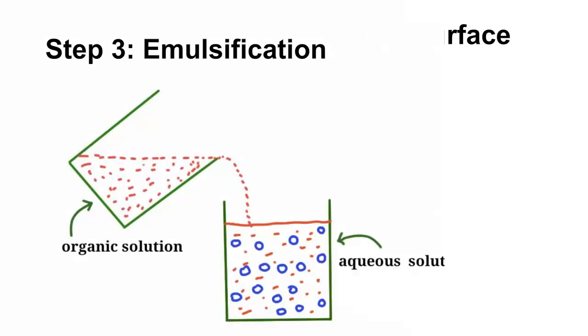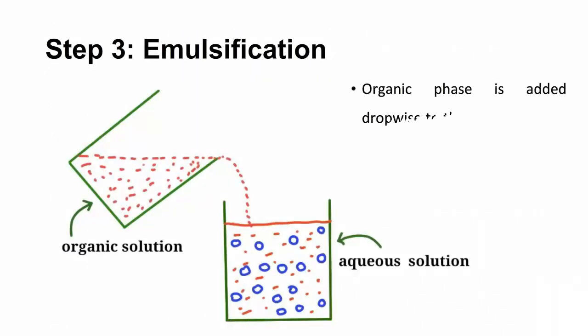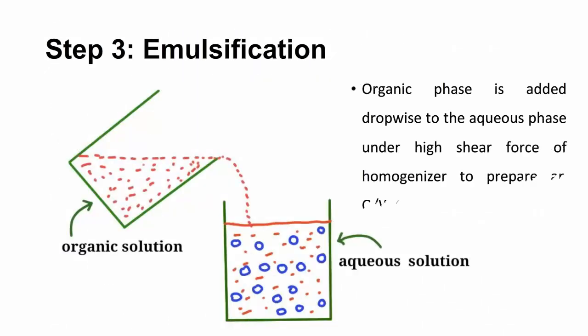The third step is emulsification. The organic phase is added dropwise to the aqueous phase under the high shear force of a homogenizer to prepare an oil-and-water type emulsion.